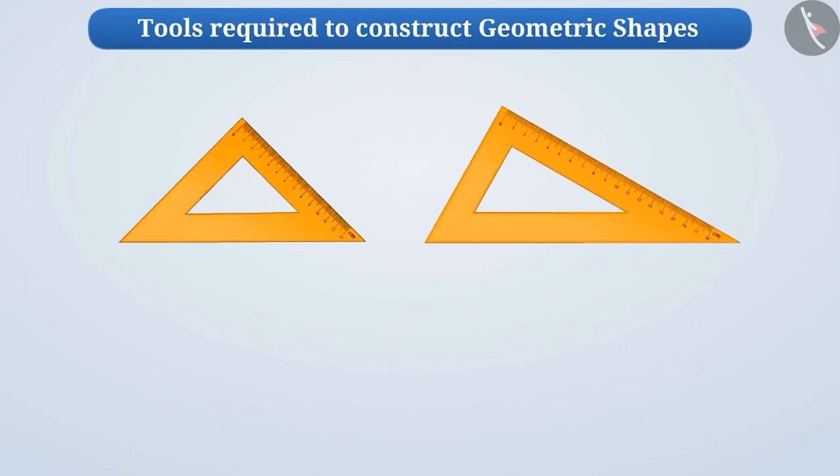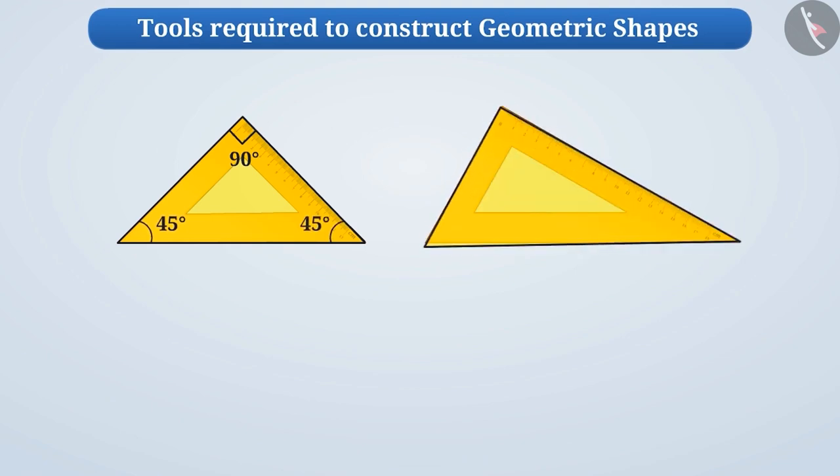We can also see two triangular pieces in the geometry box. One of these triangles has 90 degrees on one side and 45 degree angles on both the other vertices. And the other triangular piece has 30 degrees, 60 degrees and 90 degree angles at the vertices.